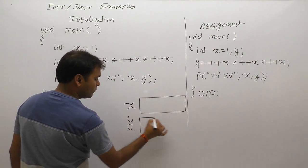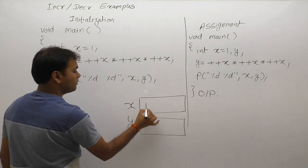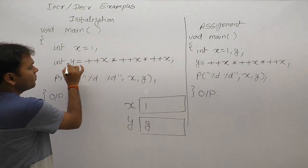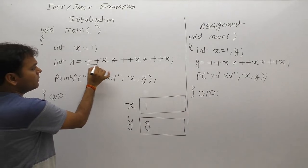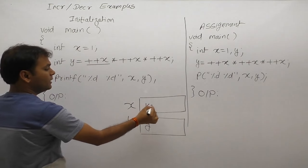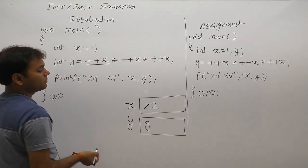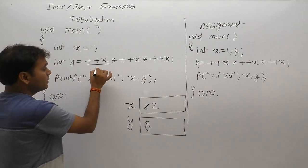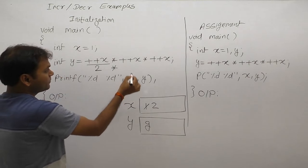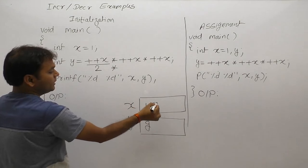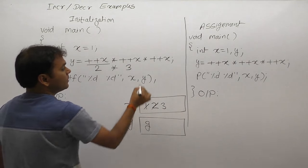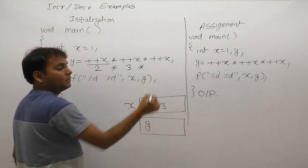Initial value of x is 1, initial value of y is garbage. According to the initialization rule, solve the given expression from left to right. First, pre-increment: pahle increment then replacement. Again pre: pahle increment then replacement — multiply. Again pre: pahle increment then replacement, multiply.